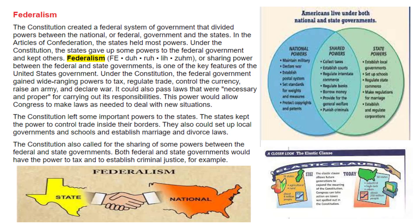The elastic clause would allow Congress to make laws as needed to deal with new situations. The Constitution left some important powers to the states, including controlling trade inside their borders, setting up local governments and schools, and establishing marriage and divorce laws. The Constitution also called for the sharing of some powers between the federal and state governments — both could tax and establish criminal justice. A Venn diagram shows the powers of the national government, the states, and those shared powers that are a key part of federalism.